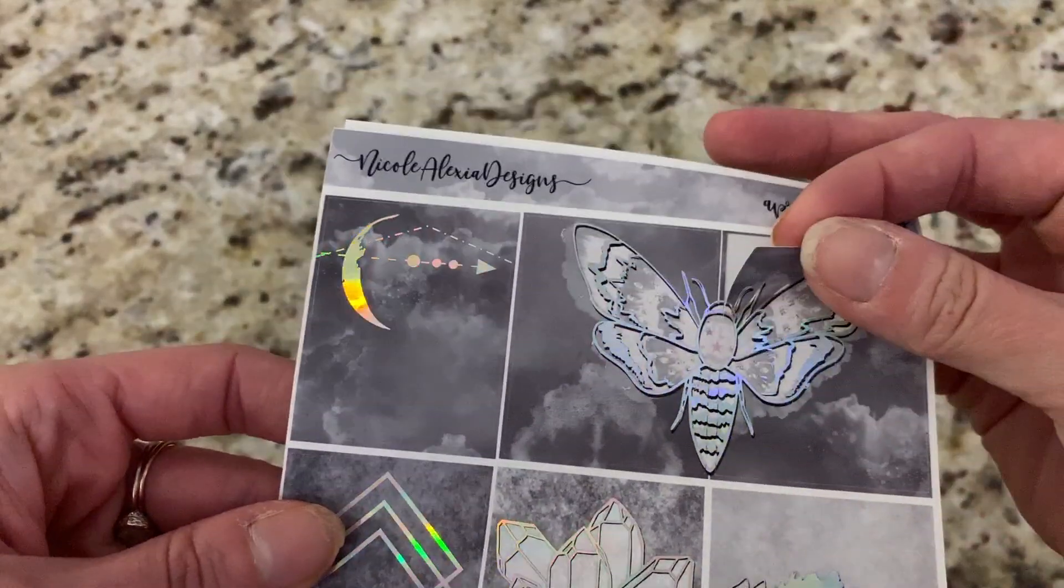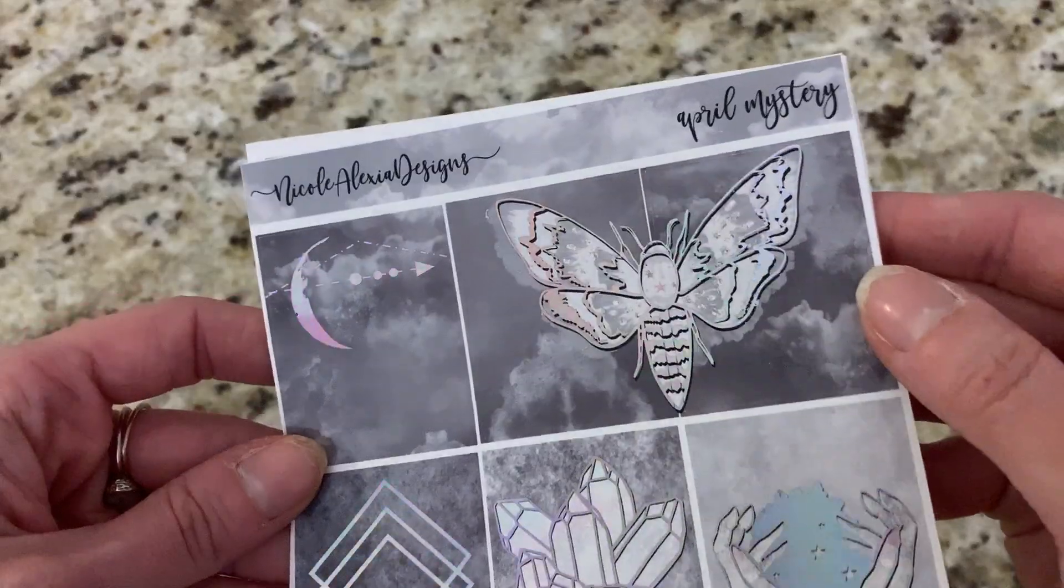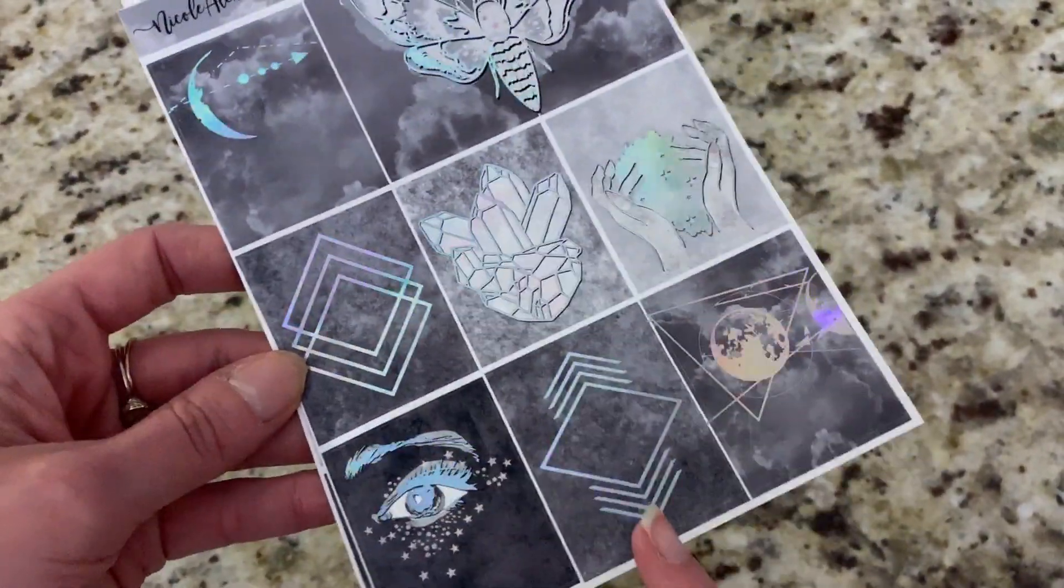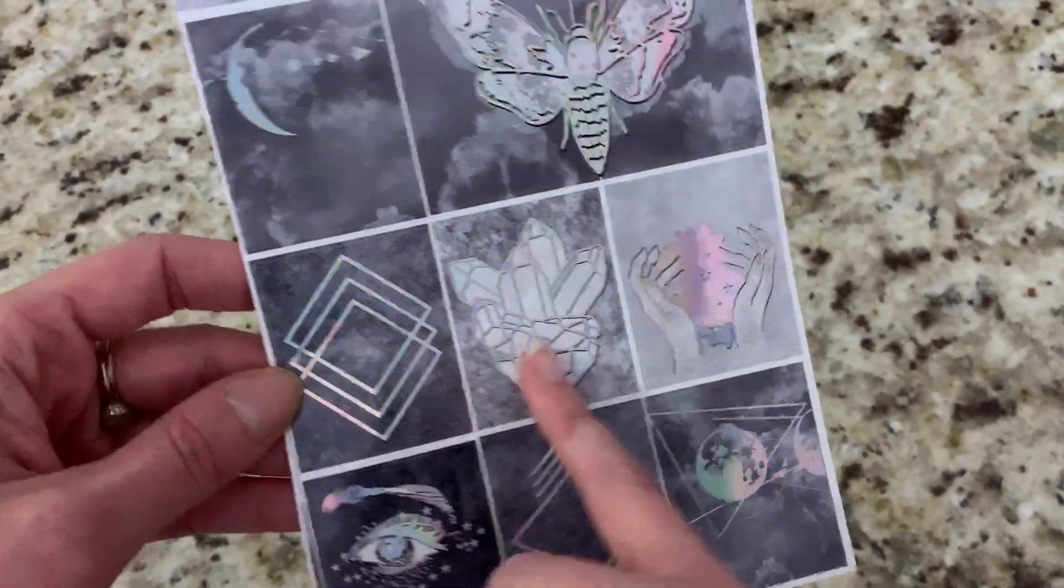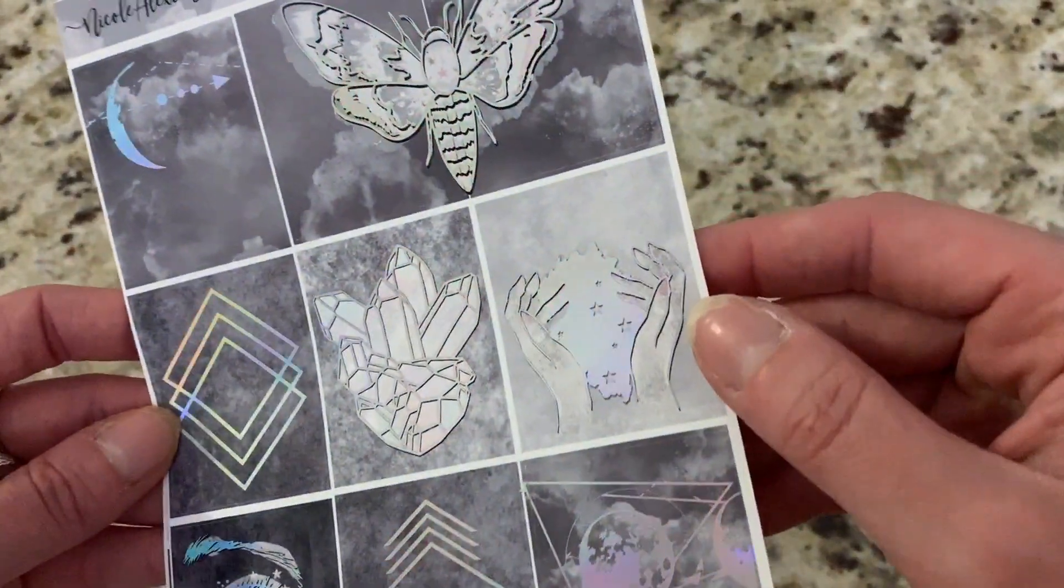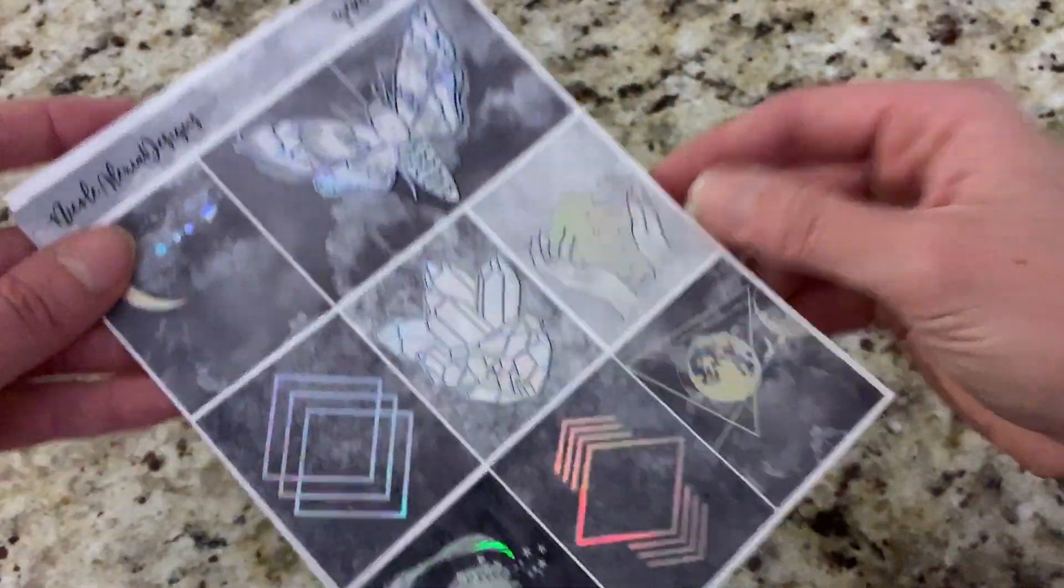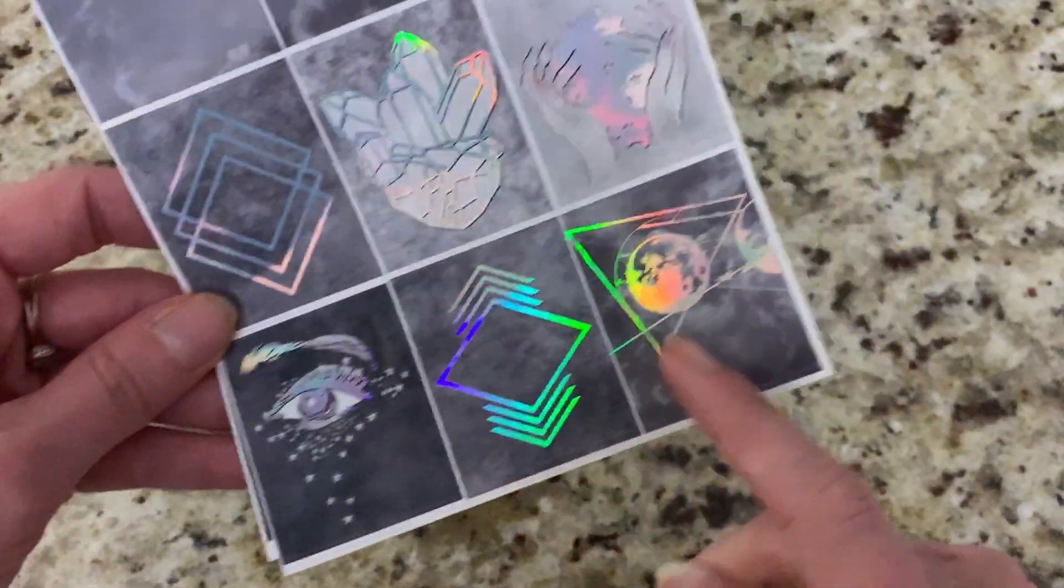There's a couple of geometric patterns down through here, which I thought was super cute. And then you've got this gemstone that also has the foil. These hands here that have the stars, and the center of that is the holo. And then over here you've got this eye that has like the stars falling from it.